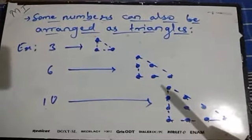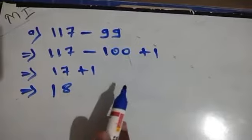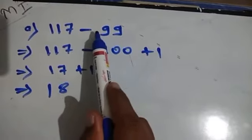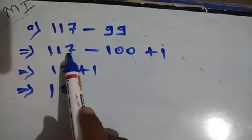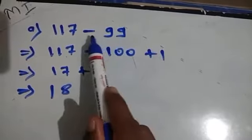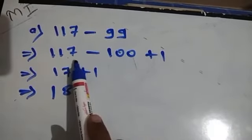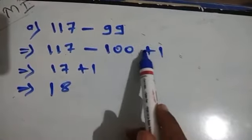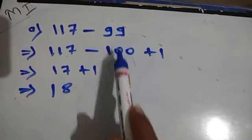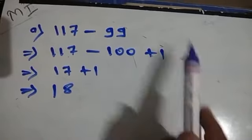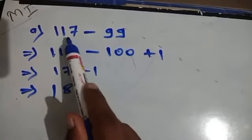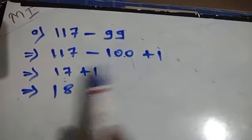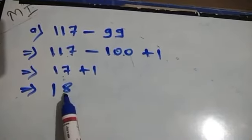Now let's look at some shortcut examples. For 117 − 99: instead of subtracting 99, subtract 100 from 117 — since subtracting 100 from any number is very easy — and then add 1 back because we subtracted 1 extra. So 117 − 100 = 17, then 17 + 1 = 18. That is the answer.